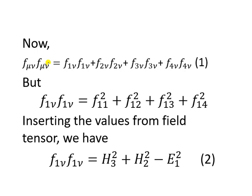We multiply F_μν by F^μν. This gives us a scalar product because all indices are contracted — that is, all indices are cancelled out. Since they are contracted, we have a scalar form. You can write this as F-squared.